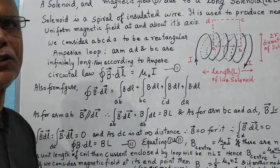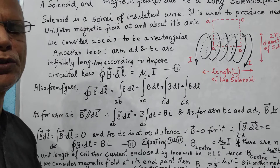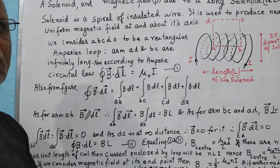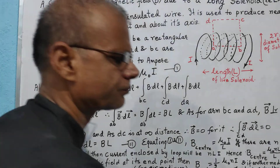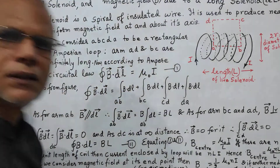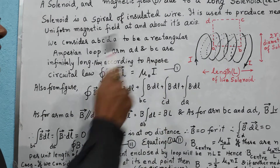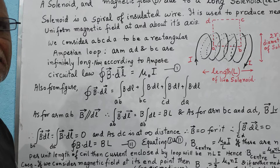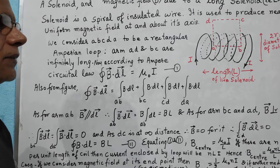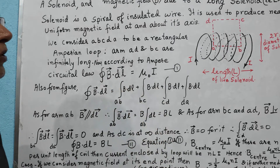Hello students. Today we are going to start a new topic. Before we start, we will learn what is called a solenoid, and then we will learn what is the magnetic field produced by the solenoid at its axis and about that region. Before we start, we must learn what is solenoid.